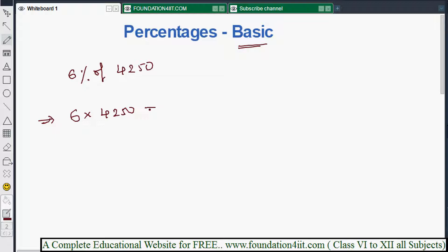First you should multiply these both values, then divide by 100. So this is 6% of 4250. That means just multiply by 6 first, then instead of dividing by 100, just place the decimal point by leaving two places. If you multiply 6 into 4250...